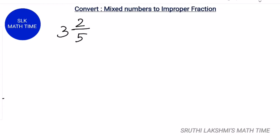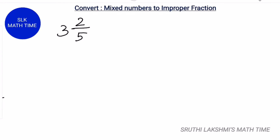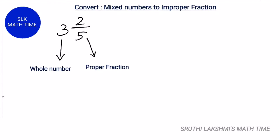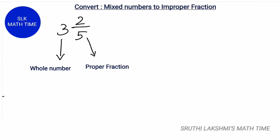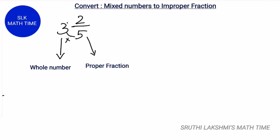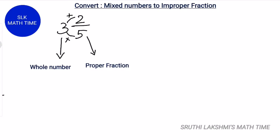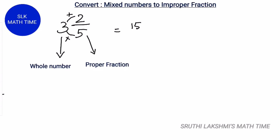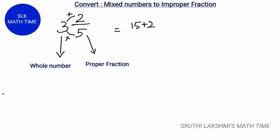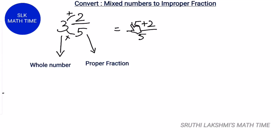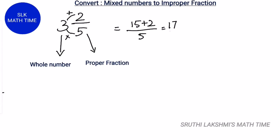We're going to see how to convert mixed numbers to improper fractions. Let's see the example 3 and 2 by 5. Here, 3 is the whole number and 2 by 5 is the proper fraction. To change the mixed number 3 2 by 5 to an improper fraction, we multiply the denominator with the whole number and add that result to the numerator. So, 3 times 5 is 15, and the numerator is 2. So we add: 15 plus 2, over 5 — keeping the denominator the same. 15 plus 2 is 17, so the answer is 17 by 5.